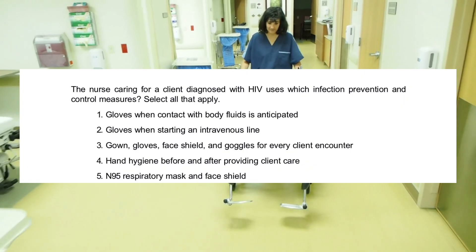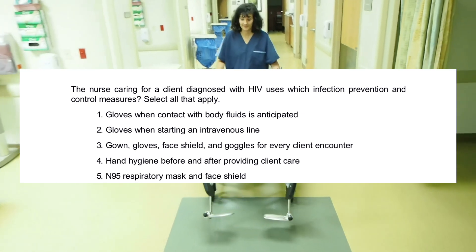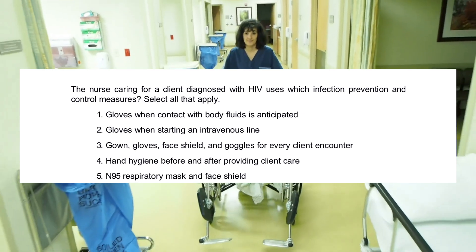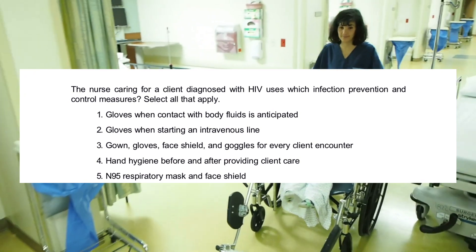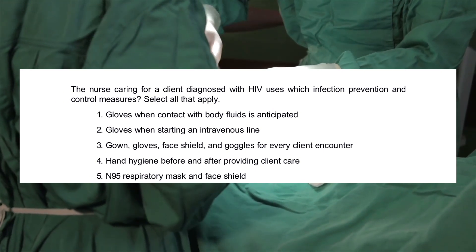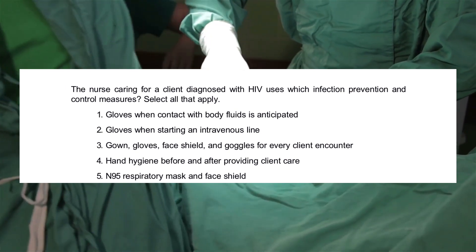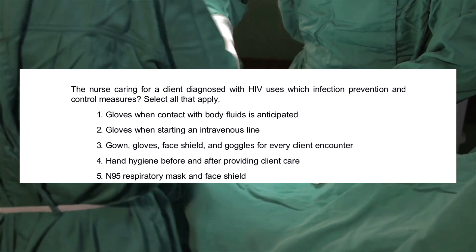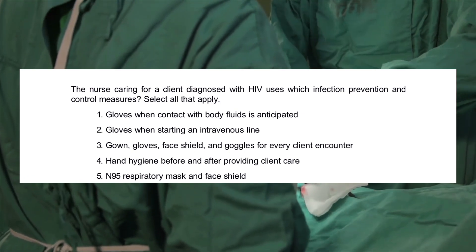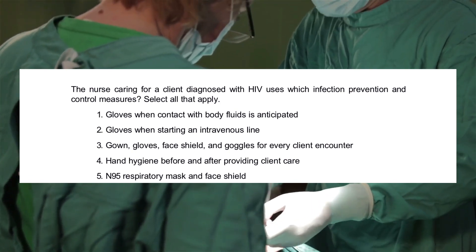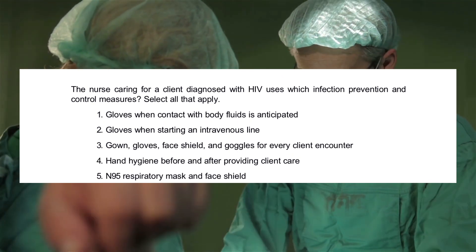The nurse caring for a client diagnosed with HIV uses which infection prevention and control measures? Select all that apply. 1. Gloves when contact with body fluids is anticipated. 2. Gloves when starting an intravenous line. 3. Gown, gloves, face shield, and goggles for every client encounter. 4. Hand hygiene before and after providing client care. 5. N95 respiratory mask and face shield.